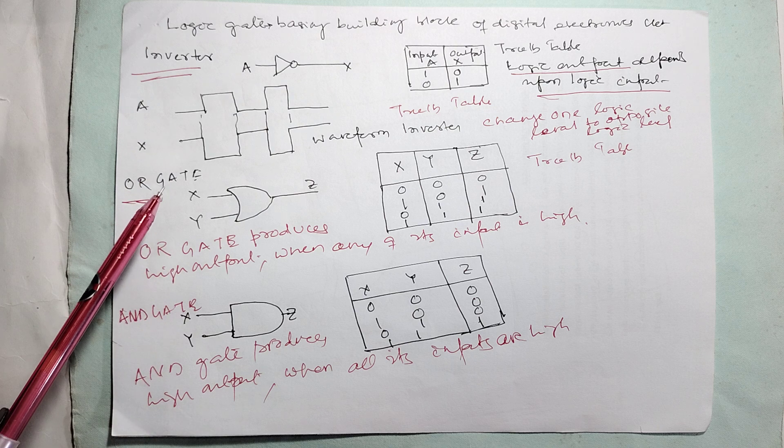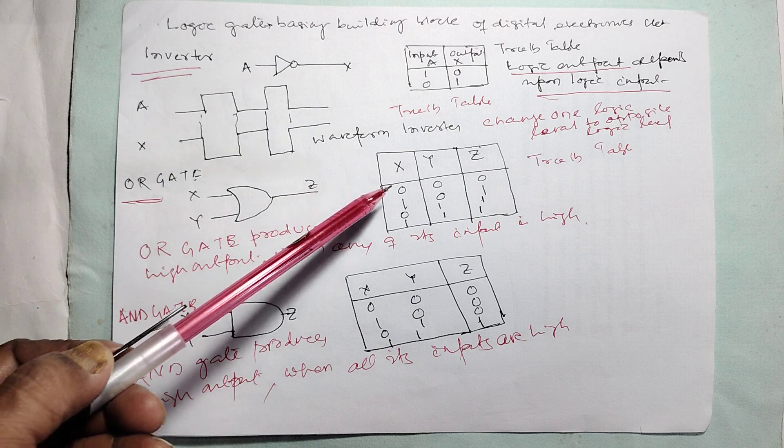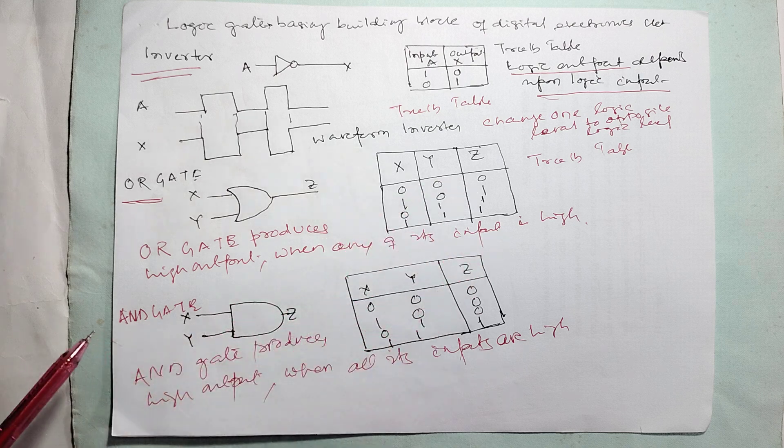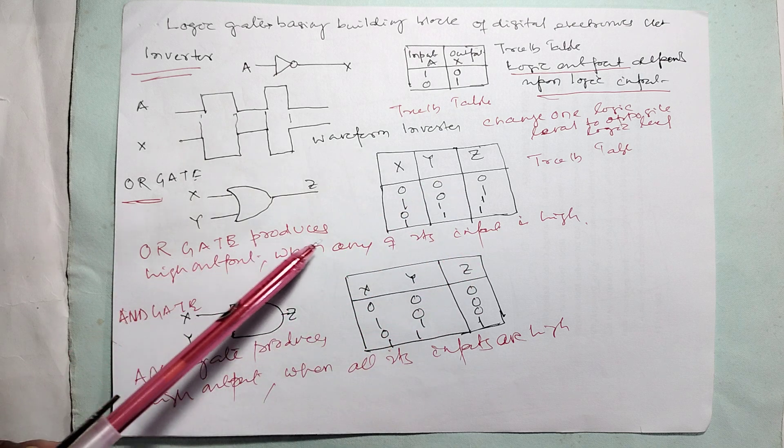OR gate means positive addition. The truth table is: 0-0 gives 0, 0-1 gives 1, 1-0 gives 1, 1-1 gives 1. OR gate produces high output when any of its inputs is high.